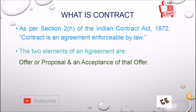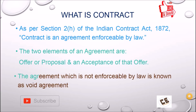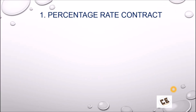The two elements of an agreement are: an offer or proposal, and an acceptance of that offer. Offer or proposal is made by the contractor and acceptance of that offer is made by the client. An agreement which is not enforceable by law is known as a void agreement. If that offer, proposal, or acceptance is not enforceable by law, then it will be a void agreement — that is, not a valid agreement.